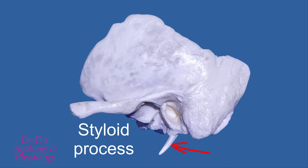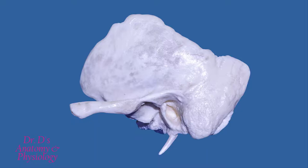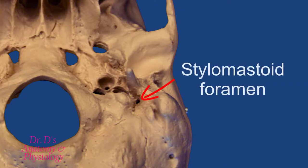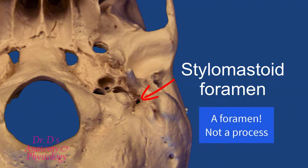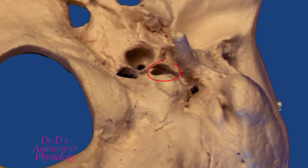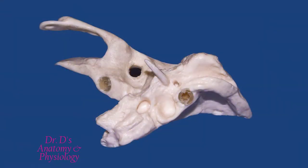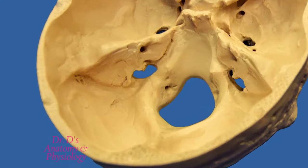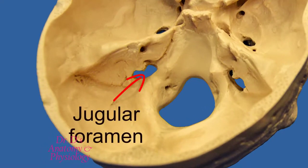Between the styloid process and the mastoid process, there is an important foramen called the stylomastoid foramen. This is a passage that allows the seventh cranial nerve, the facial nerve, to exit from the cranium on its way to the muscles of the face. Immediately medial to the styloid process, there is a depression which is the jugular fossa. The jugular fossa joins with the occipital notch to give you the jugular foramen, which is an important exit point for a number of cranial nerves and also where the internal jugular vein exits from the cranium.